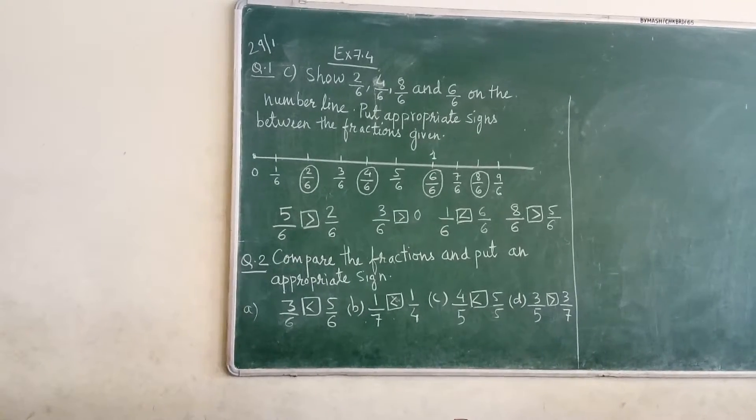Show 2 upon 6, 4 upon 6, 8 upon 6, and 6 upon 6 on the number line. Put appropriate signs between the fractions given. So first you have to draw the number line. You can see zero is here, number line drawn.